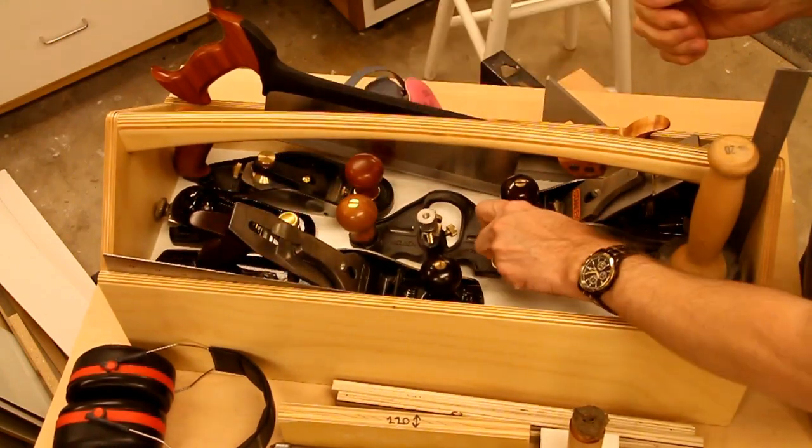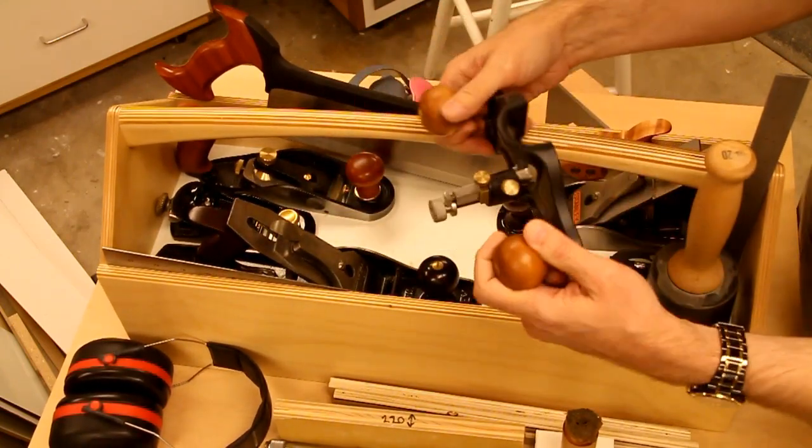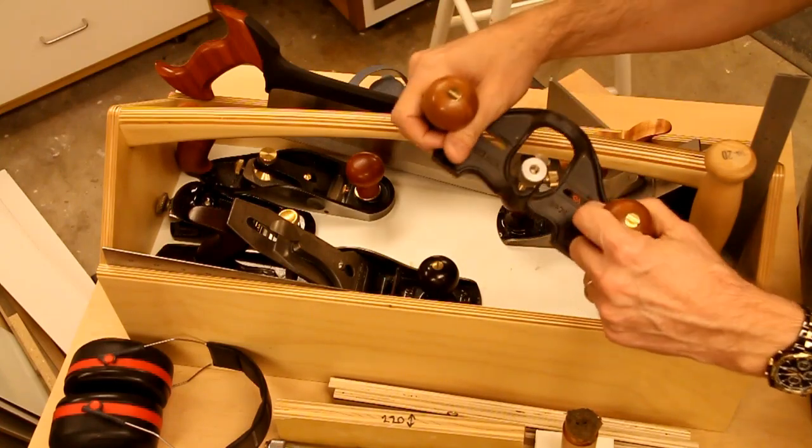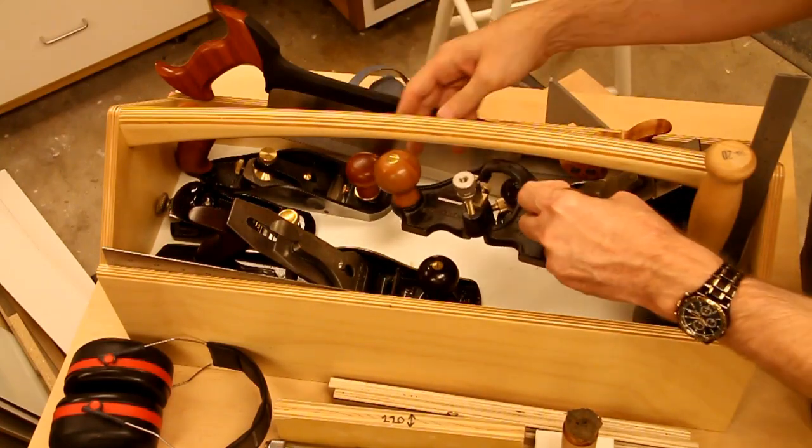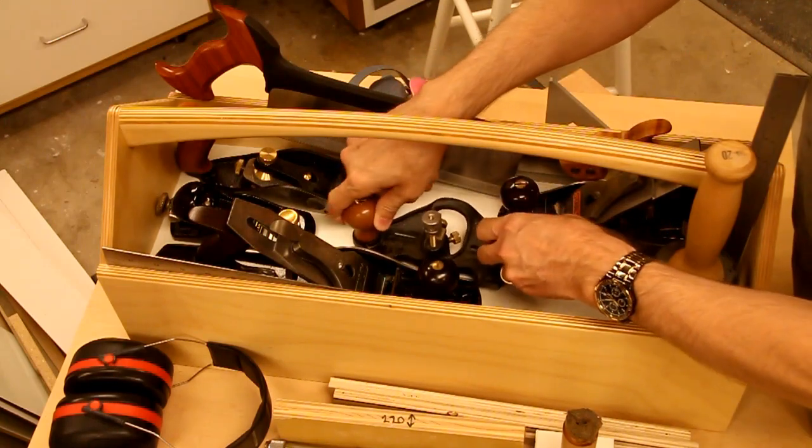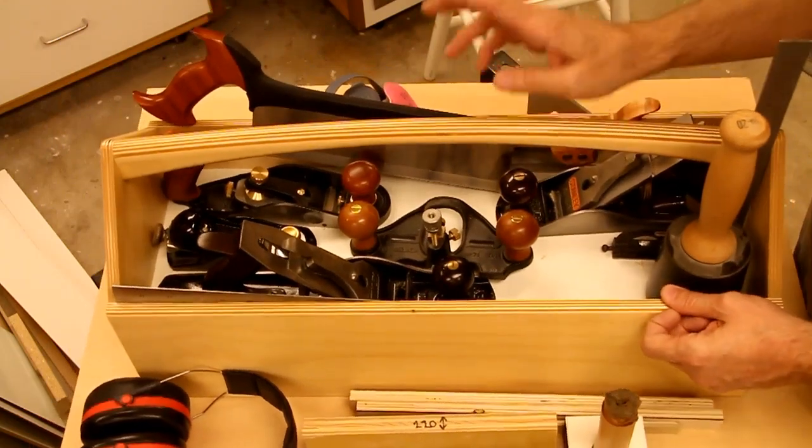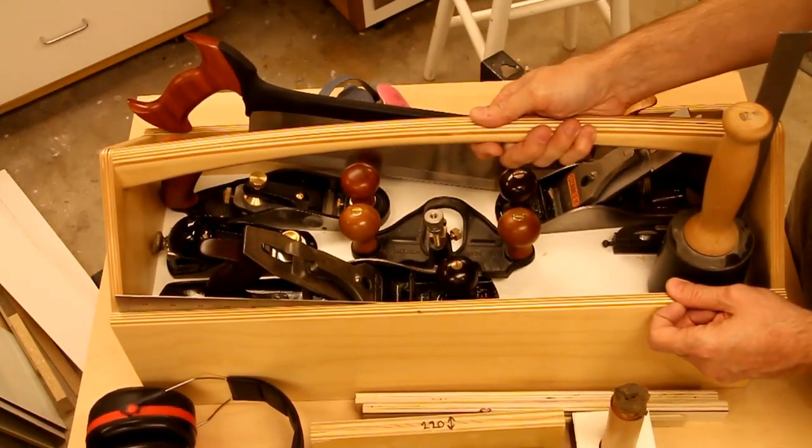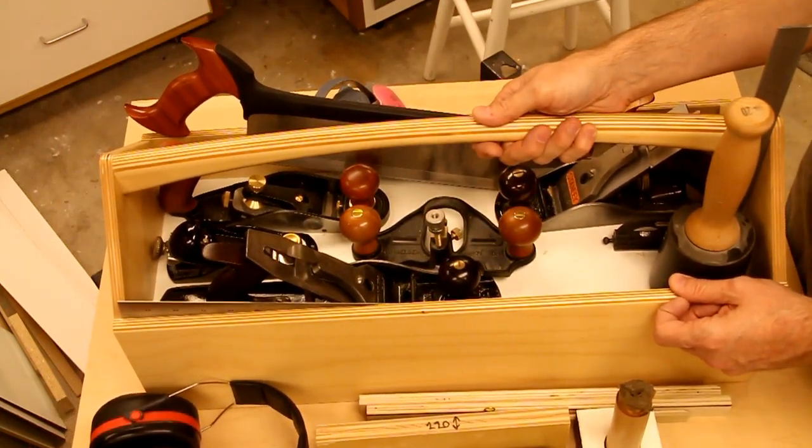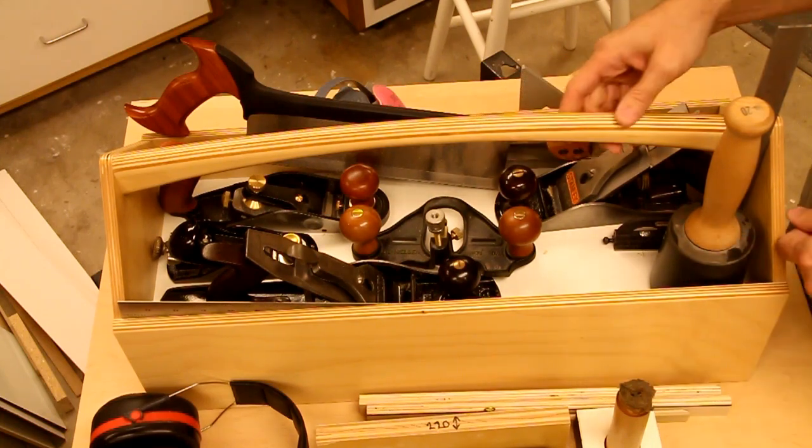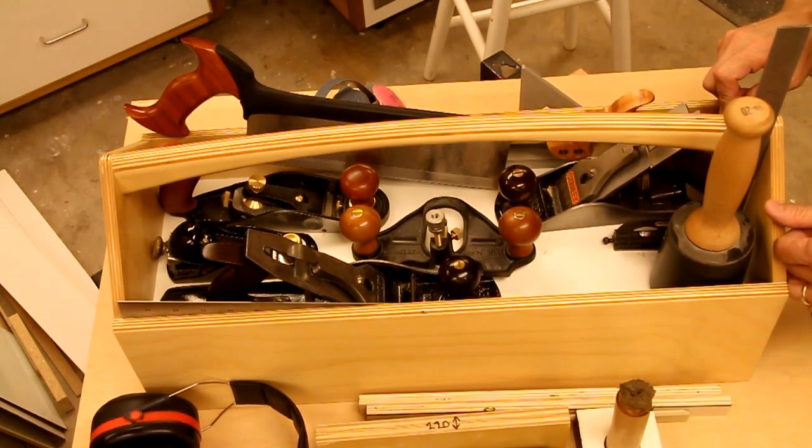And then my router plane. In this case, a Lee Nielsen. And that's it for the center compartment. There's room to pack more stuff in here if you just want to make it heavier, but this works for me. So let's take a look at what's in the side drawers.